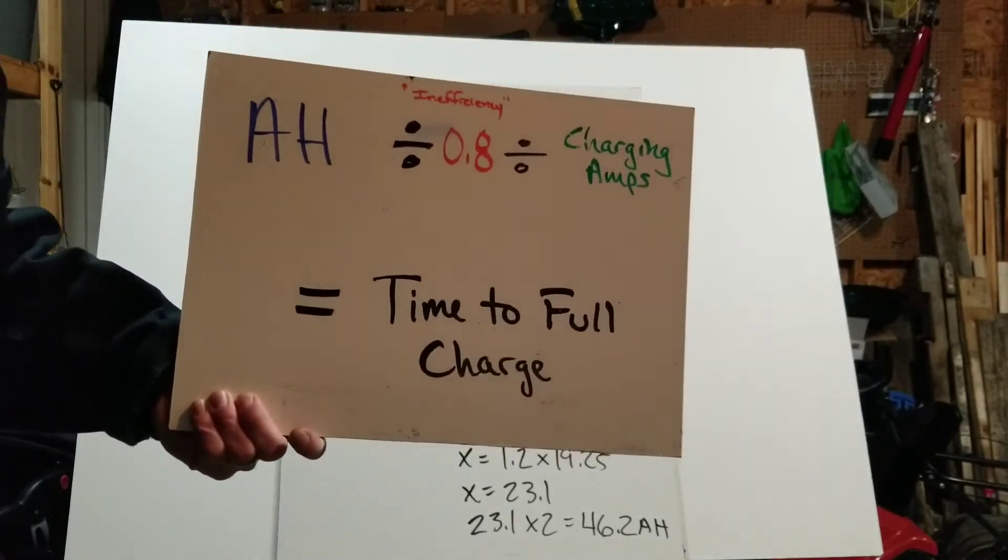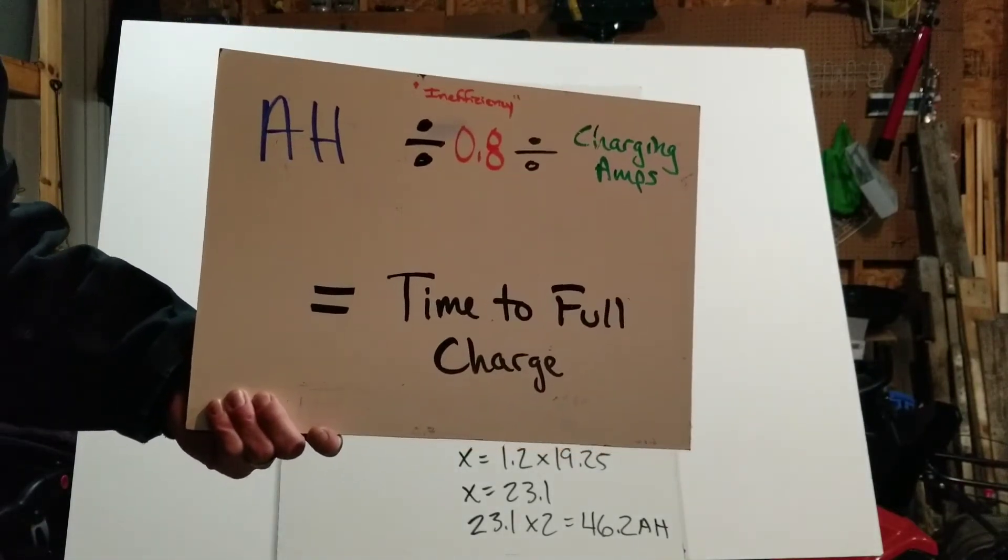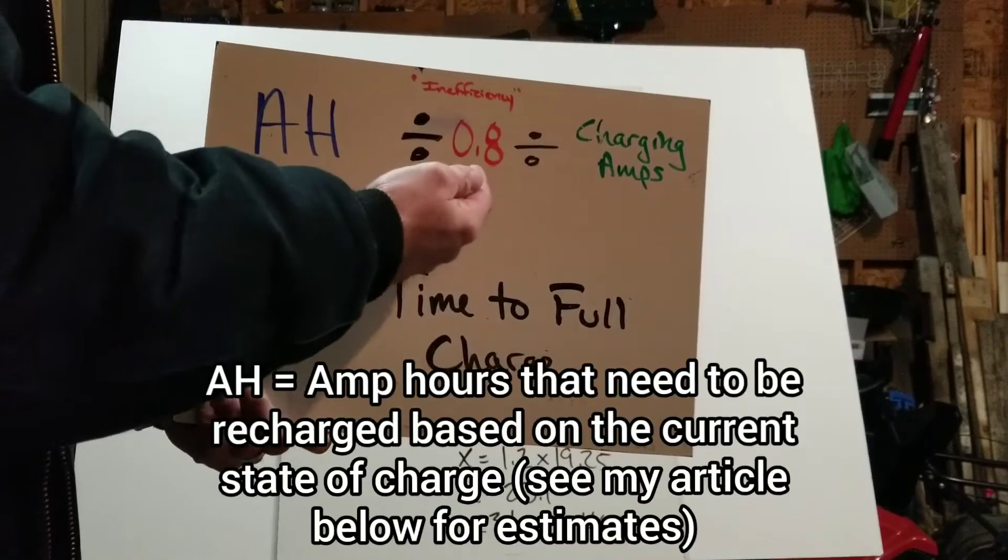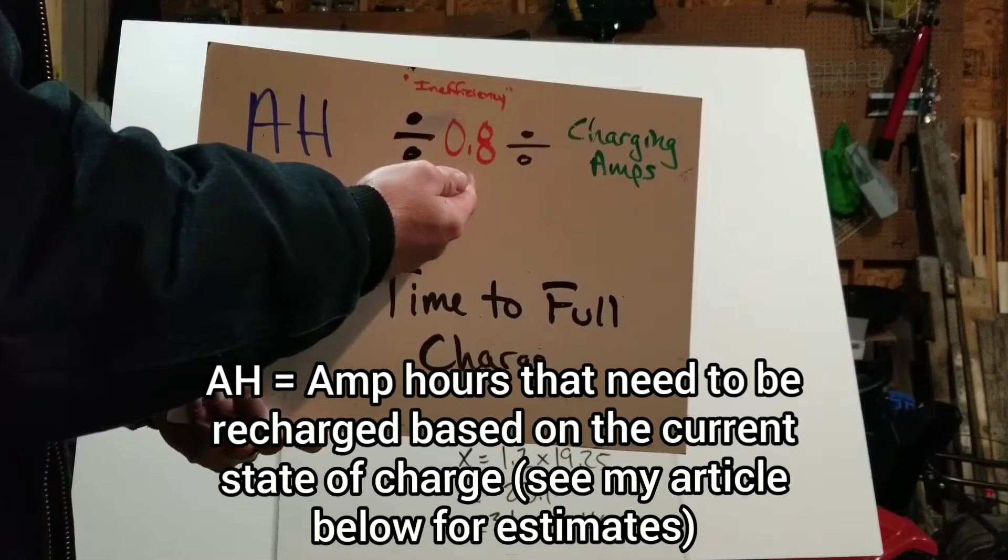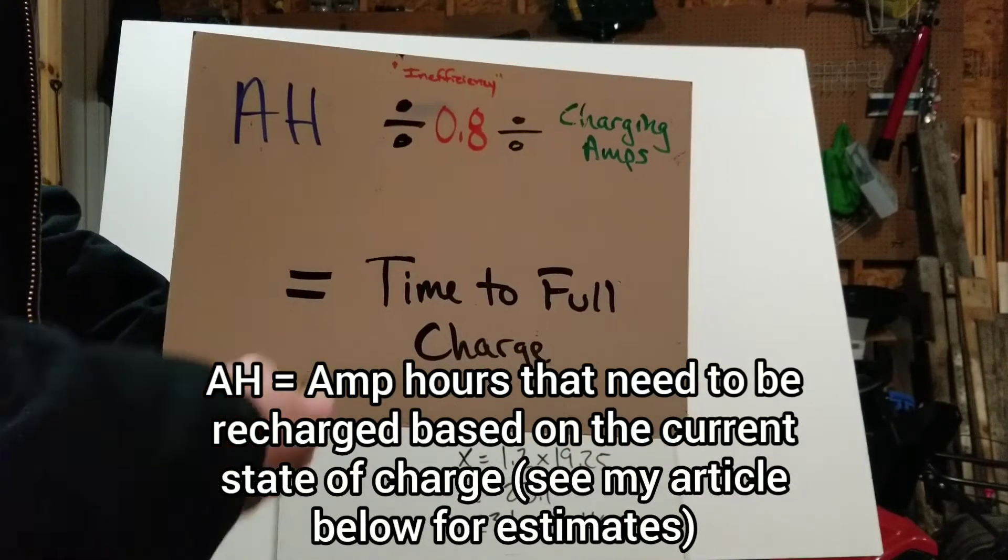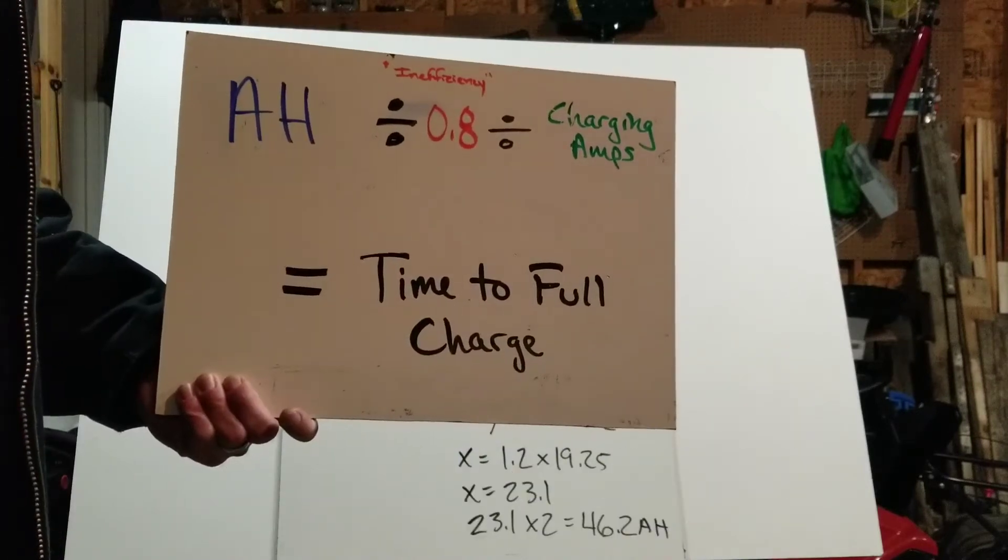All right guys, if you're just here for the quick formula, it's basically going to be the amp hours of your car battery divided by 0.8, then divided by the charging amps of the battery charger that you have, and that will give you the time to a full charge.